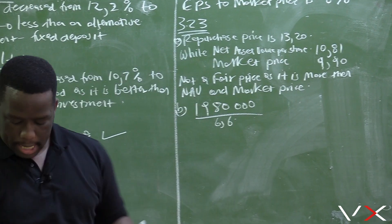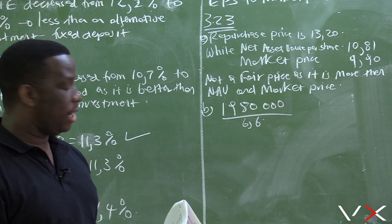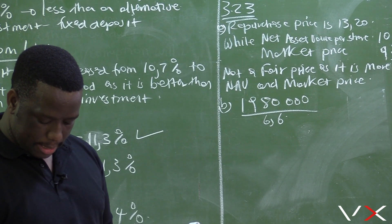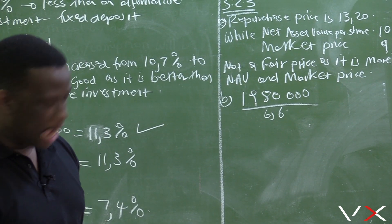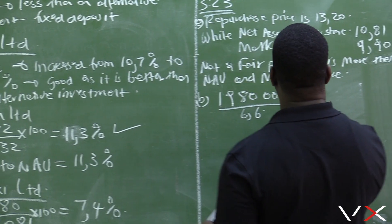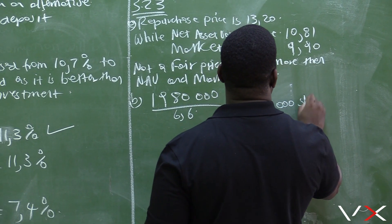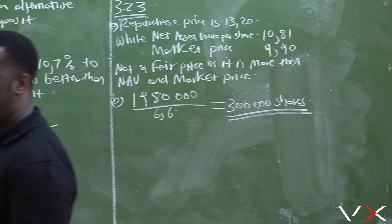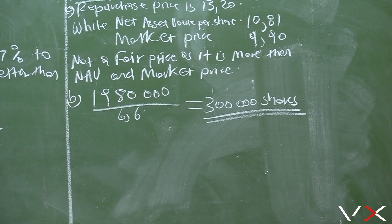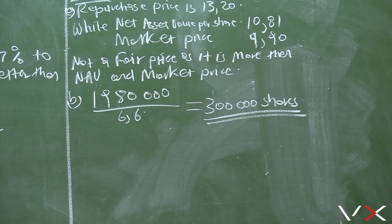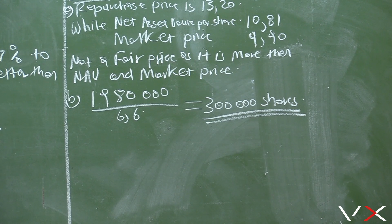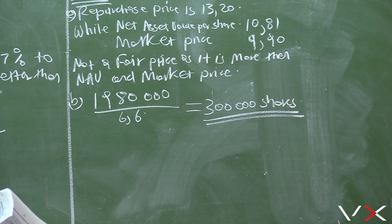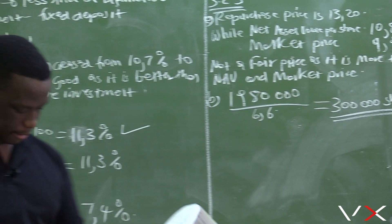So we calculate: R1,980,000 divided by R6.60, which gives us 300,000 shares. Bob purchased 300,000 shares in Broom Ltd.